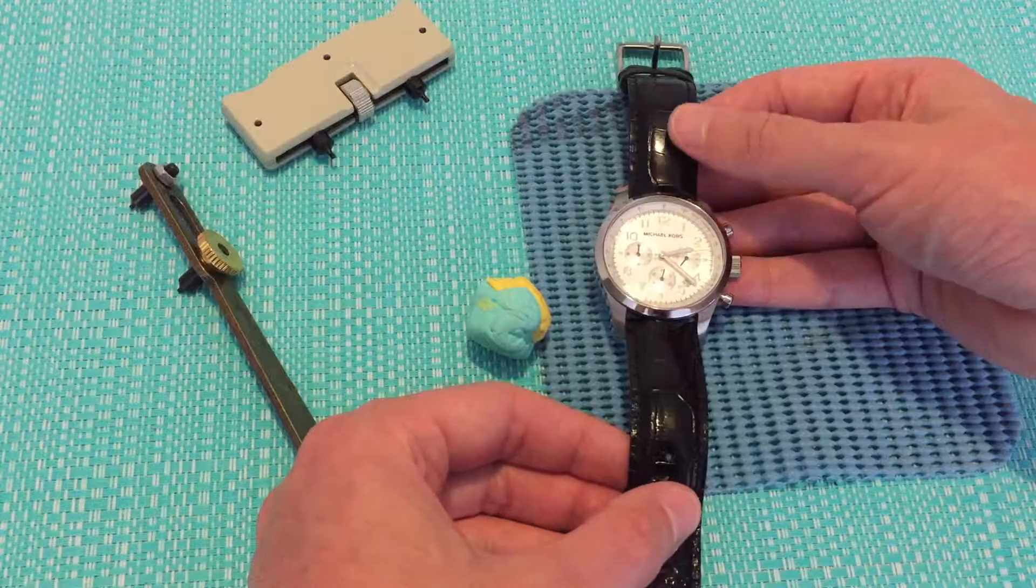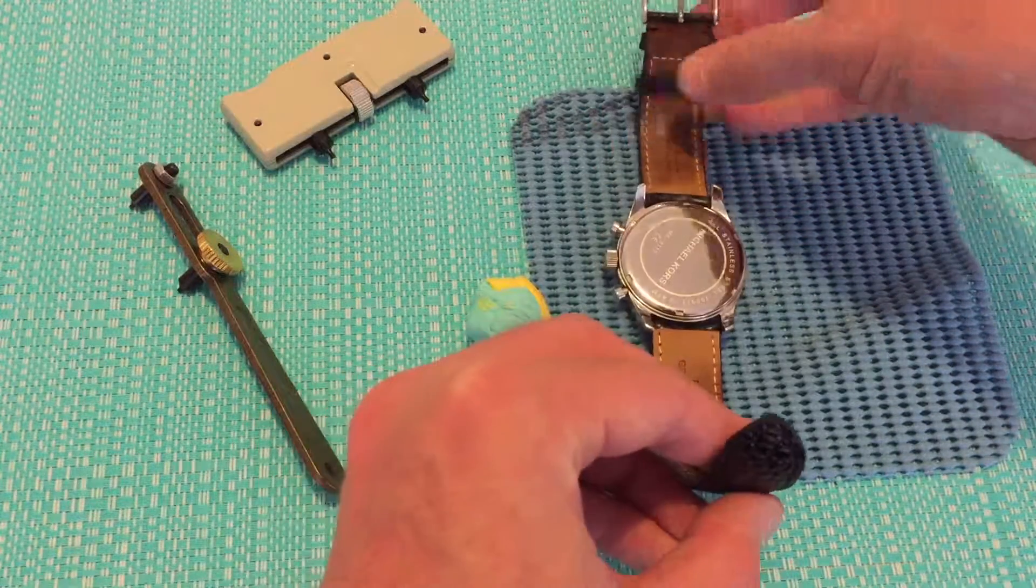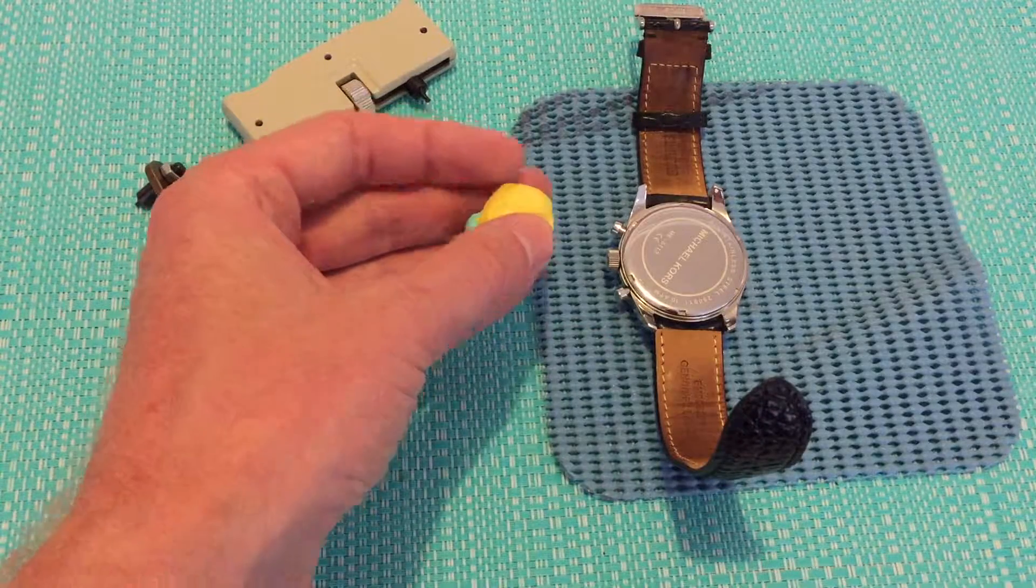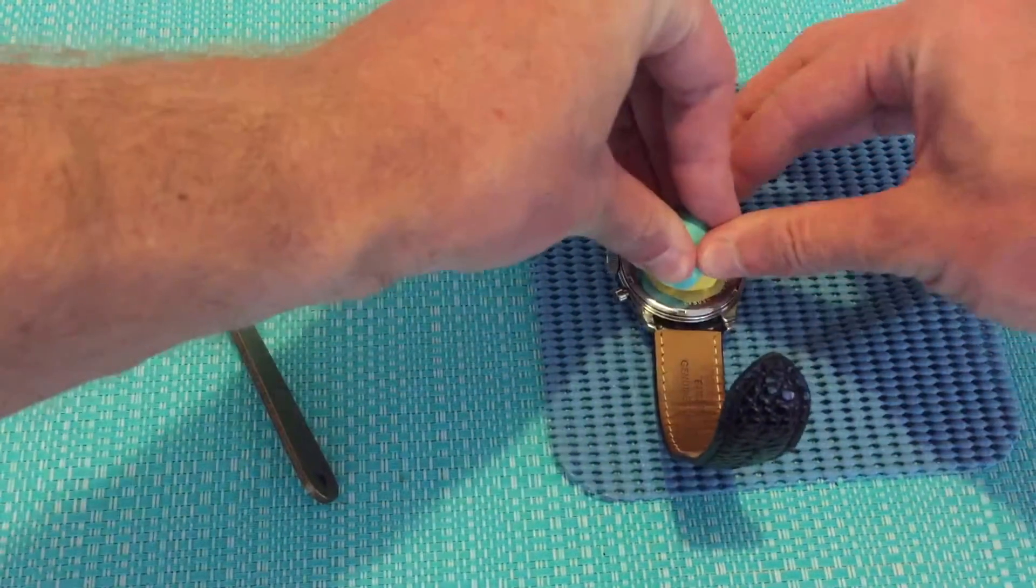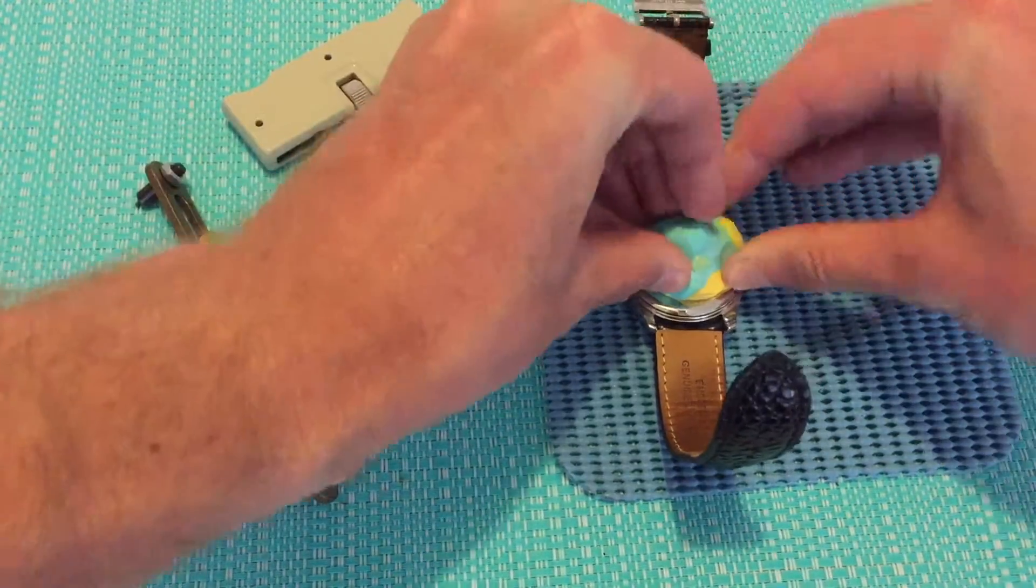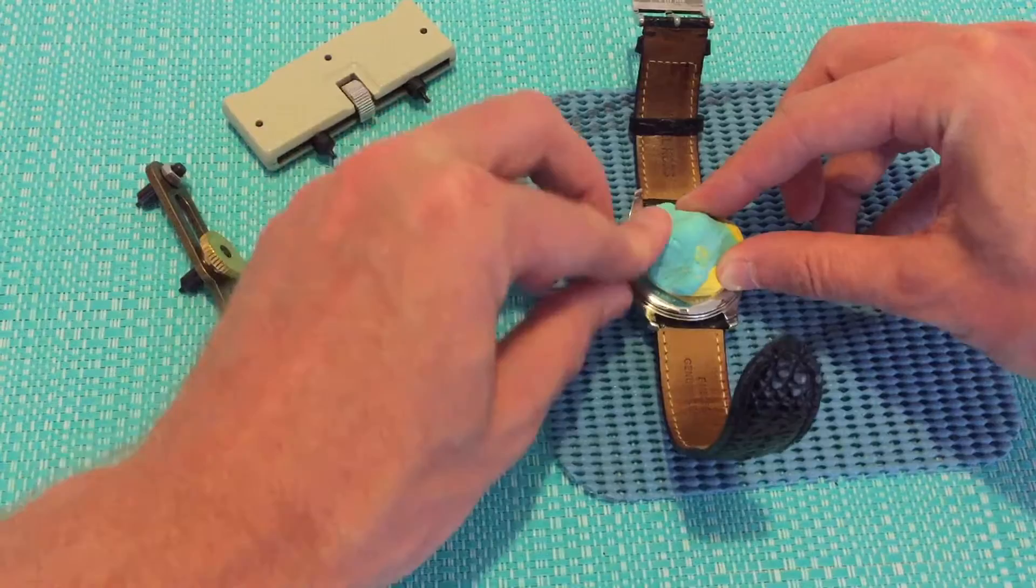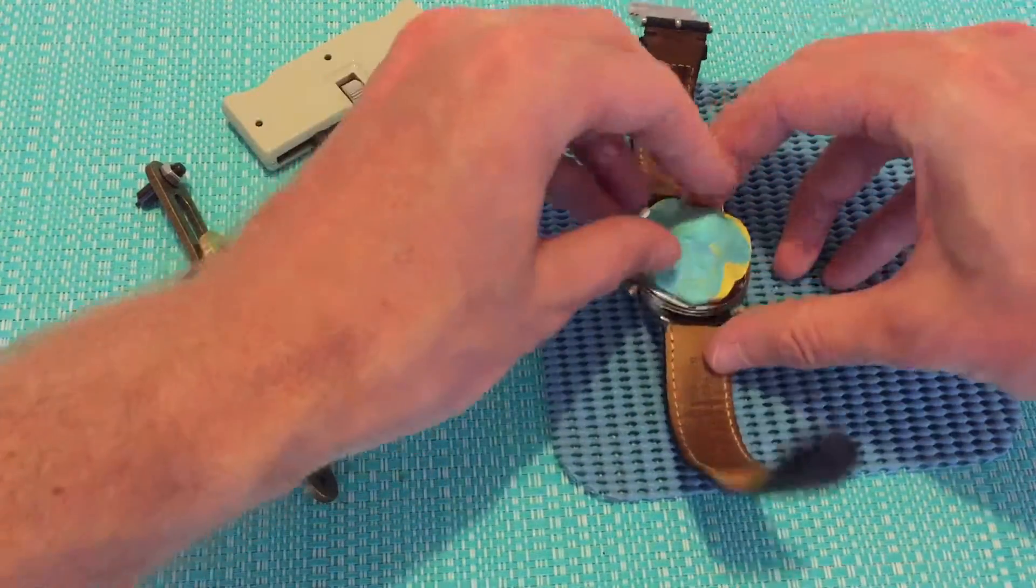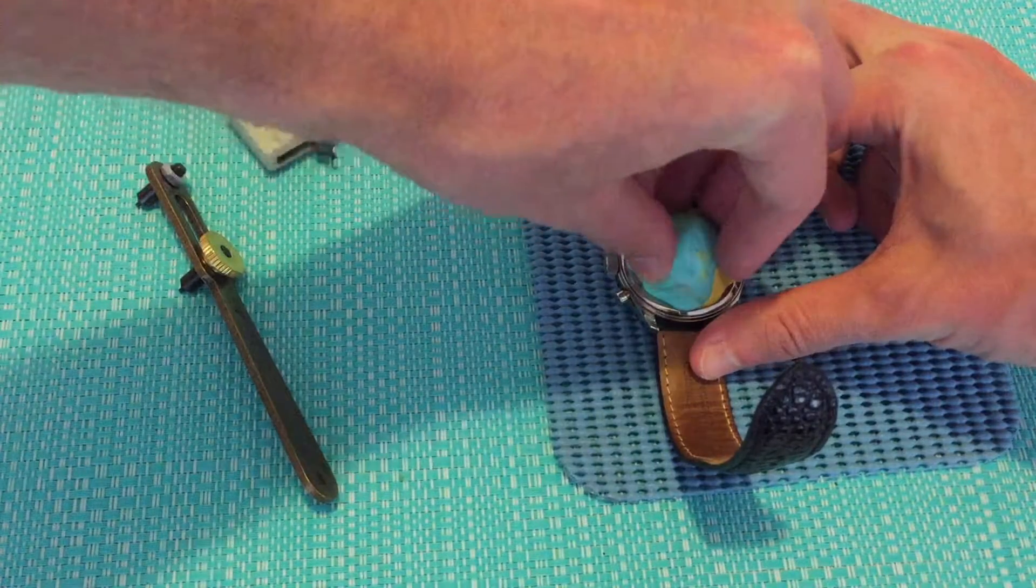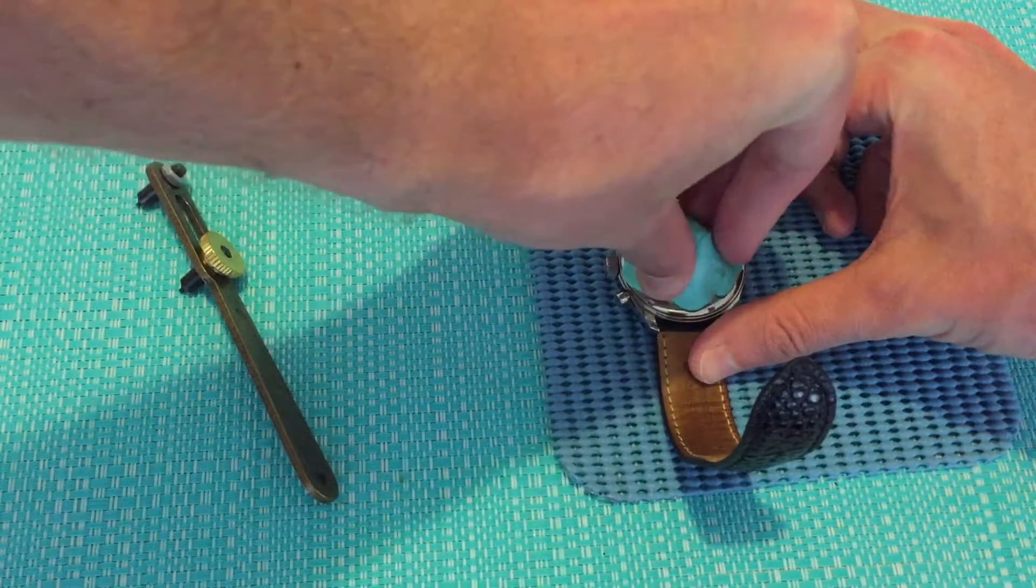If you don't have any tools at home and you're lucky enough to have a back which isn't on too tight—it doesn't get more simple than this. Get your piece of everyday blu-tack. You're going to push it on firmly, covering as much of the case back surface as possible. You'll need quite a big piece to get a good grip. Apply some downward pressure and twist.